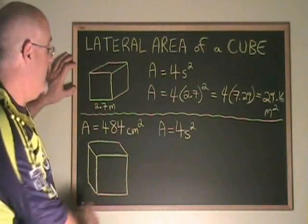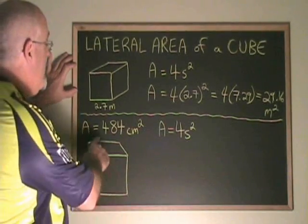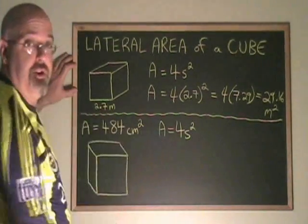In this second example, we are given the area and we are being asked for the side length. We plug 484 into the A position in the formula.